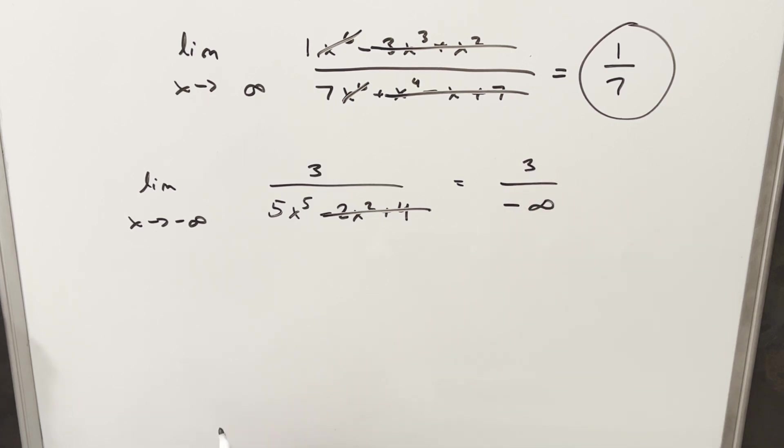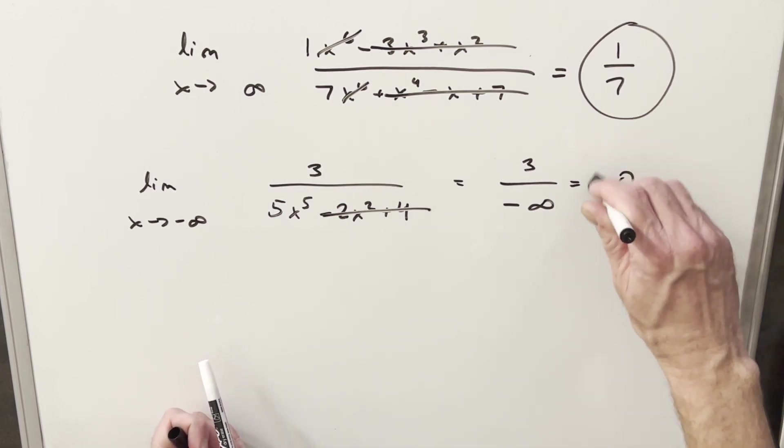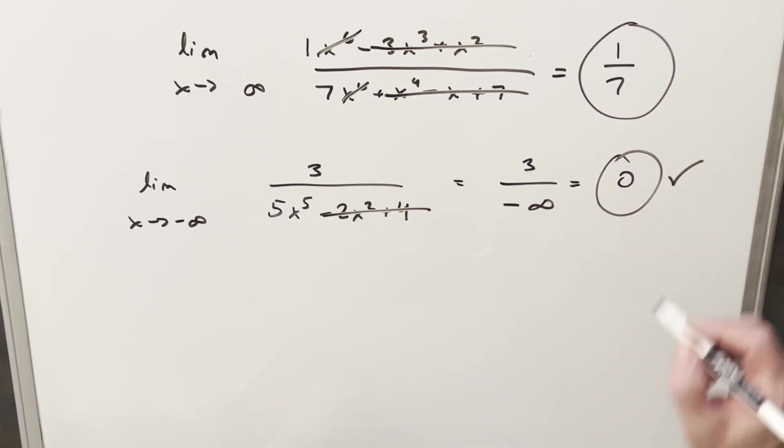And then in our numerator, we're just going to have 3. Now, you may think because we have the minus sign here, we want to do this as minus 0. But actually, because this is going to 0, 0 is just 0. And so the limit for this one is just going to be 0.